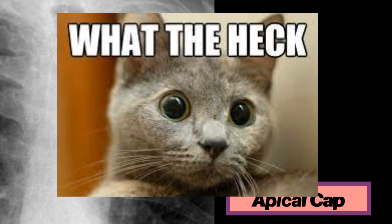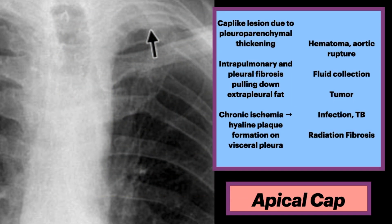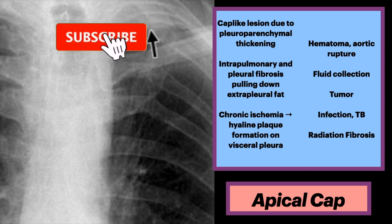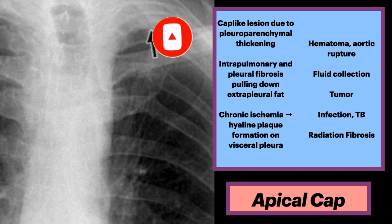What is an apical cap? An apical cap is a cap-like lesion at the lung apex due to pleural parenchymal thickening. It's usually caused by intrapulmonary and pleural fibrosis pulling down extrapleural fat. It can also possibly be caused by chronic ischemia, resulting in hyaline plaque formation on the visceral pleura.